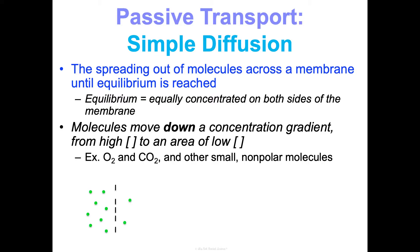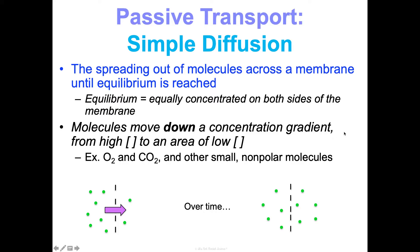I highly recommend you sketch these diagrams in your notes — I made them simple so you can repeat them. Draw a dotted line to represent the selectively permeable cell membrane. One side has a high concentration of, let's say, oxygen, and the other has a low concentration. With simple diffusion, these molecules naturally move from high to low, and over time this continues until the oxygen is equally concentrated in and out of the cell.